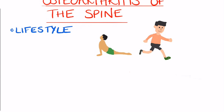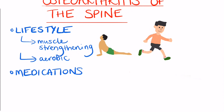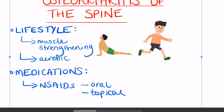Management of osteoarthritis of the spine starts with lifestyle changes, which can include exercises such as local muscle strengthening and improving general aerobic fitness. Weight loss would also be beneficial in overweight patients, and pain medication can be used including NSAIDs — topical or oral — and paracetamol.